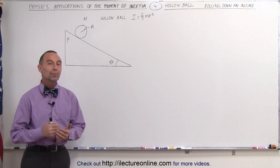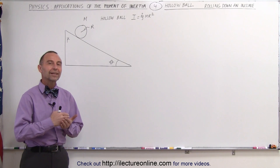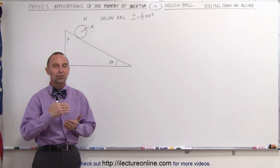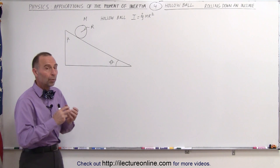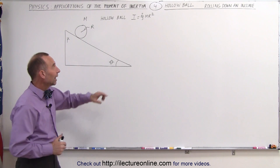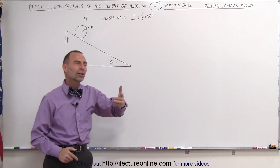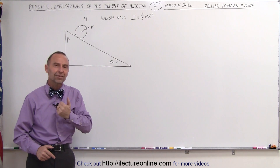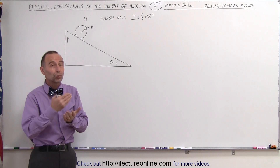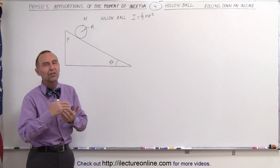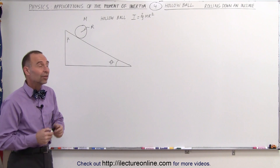Welcome to ElectronLine. In the previous video we showed you how to calculate the acceleration of a rolling solid disk. Here we're going to do a rolling hollow ball. It has a larger moment of inertia than a solid disk, which means acceleration should be less than before. In the previous video the acceleration was two-thirds g times the sine of theta, so let's find out what it is in this case.